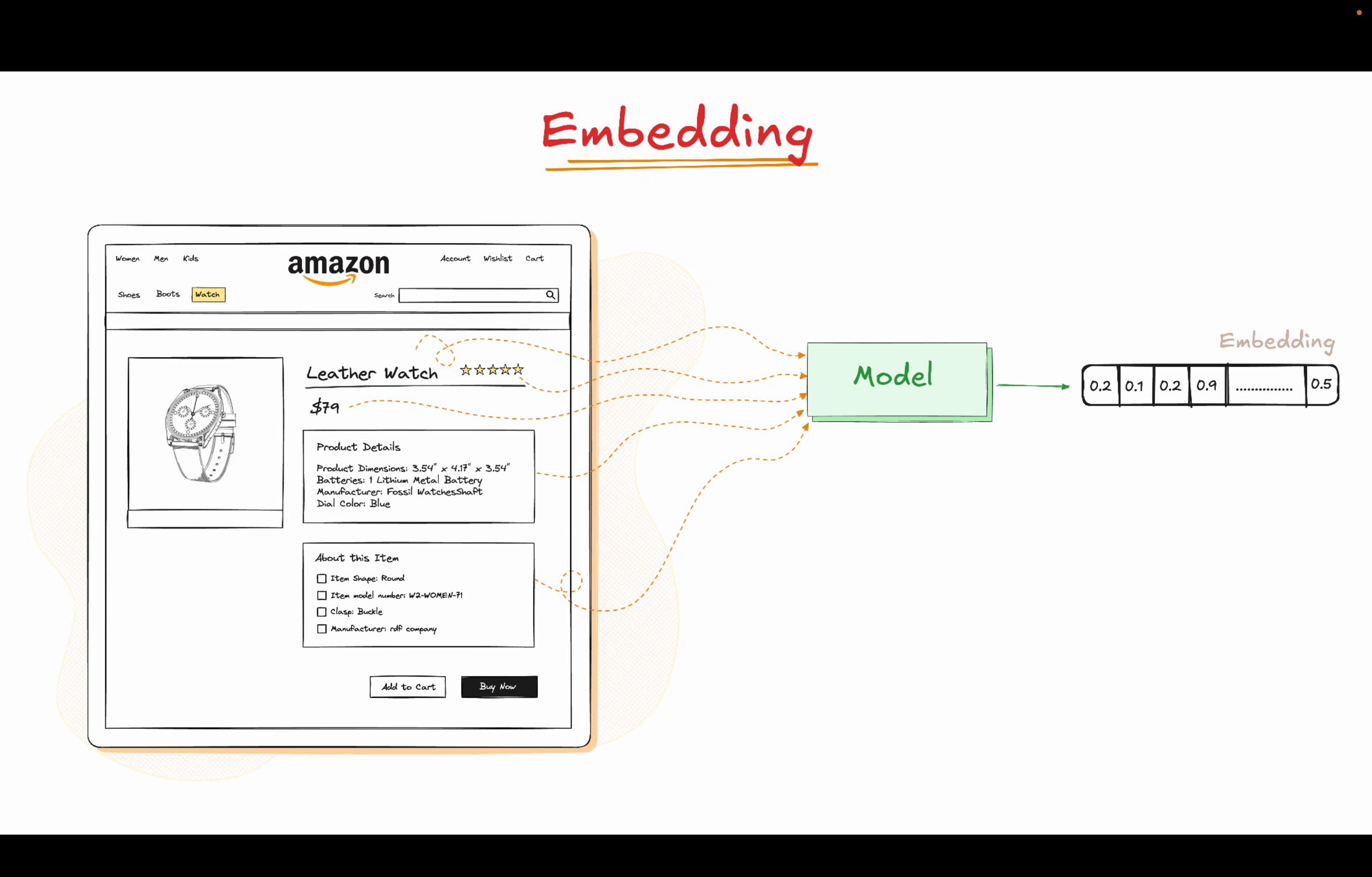Now let's throw a completely different example—say a leather watch. Like before, all the details are fed into the model, it creates an embedding. But if you look at the embedding space now, you'll see how watches are plotted far away from shoes and boots. And that makes sense, because a watch is totally different from footwear. There's almost no overlap in their features. In this space, the distance between items is like a measure of how similar or, in this case, how different they are.